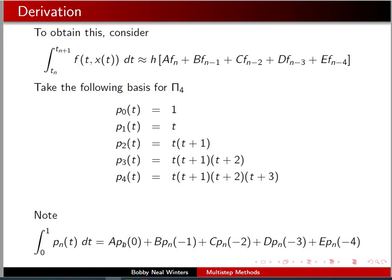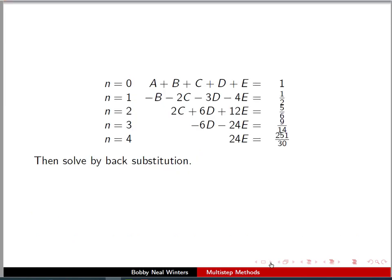So, for values of n starting with 0 going up through 4, when we do that, we get on one side, our a, b, c, d, and e, and the other side, the value of the integral.